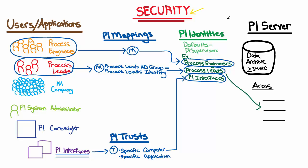In the previous video, we learned what are identities, mappings, and trusts and how are they used to configure PI Data Archive security in a way that allows us to control who or what really gets access and to tailor the permissions in the most manageable way. In this video, we'll be taking a deep dive into this map to discover exactly what are those security areas on the Data Archive and what security defaults are already in place in new PI systems and should they be leveraged.